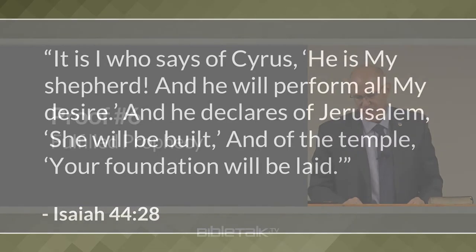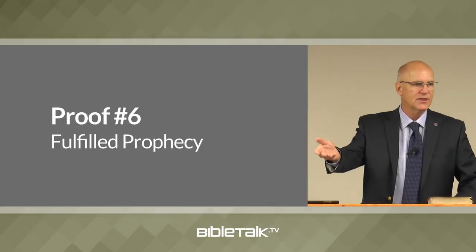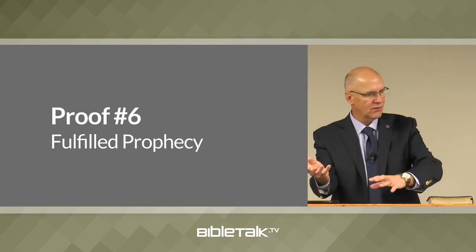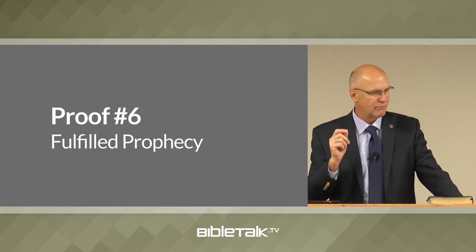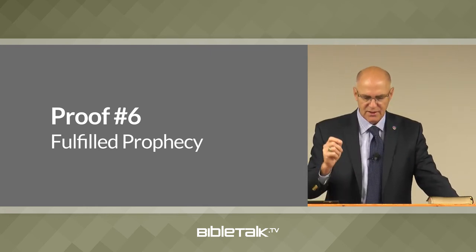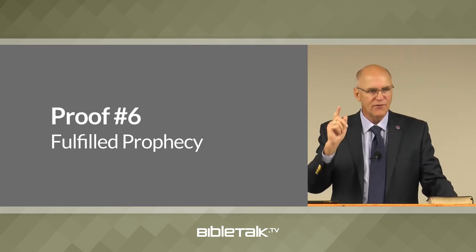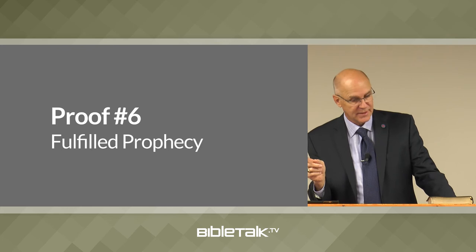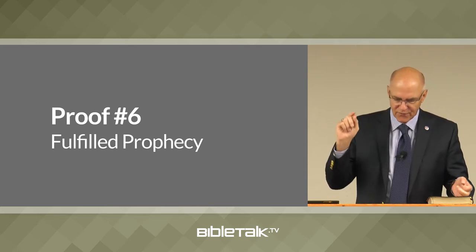One example is Isaiah 44:28. God is speaking and says: 'It is I who says of Cyrus, He is my shepherd and He will perform all my desire. And He declares of Jerusalem, She will be built, and of the temple your foundation will be laid.' Isaiah lived in 700 BC. Cyrus, the one being mentioned here, was a king who only ruled a hundred and fifty years after Isaiah. So in Isaiah you have the prophet who names him, gives his position, and explains what he would eventually do — it's like naming the president of the United States a hundred years from now and even telling which party that president will be in.